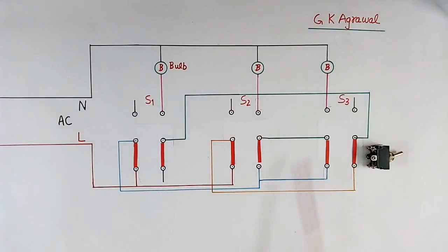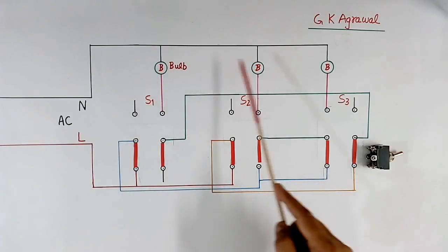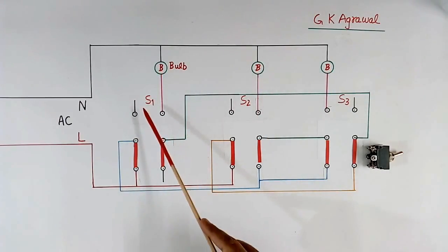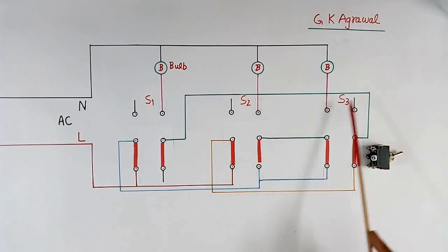This is circuit diagram. This is incoming supply. These are 3 bulbs. This is 1 switch, this is 2nd switch, this is 3rd switch.